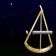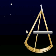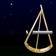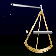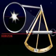The index arm indicates the angular distance between them. The image of the star is reflected from the index mirror to the horizon glass and then into the telescope. An observer looking through the telescope sees the horizon through the transparent glass and the image of the star on the mirrored half of the horizon glass.